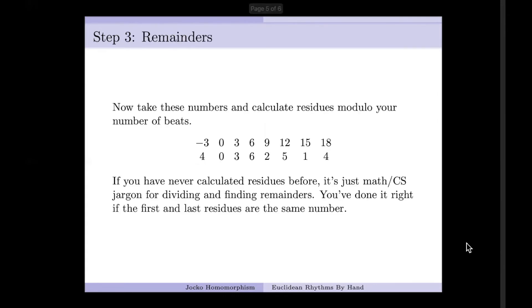This next step might be a little bit odd if you've never used modular arithmetic before. People from computer science or discrete mathematics will be pretty familiar with this. The idea is that we want to take these numbers, we're going to divide by the number of beats in the measure and find the remainder. So for mine, negative three has a remainder of positive four. That's kind of a weird one, but you get used to it.